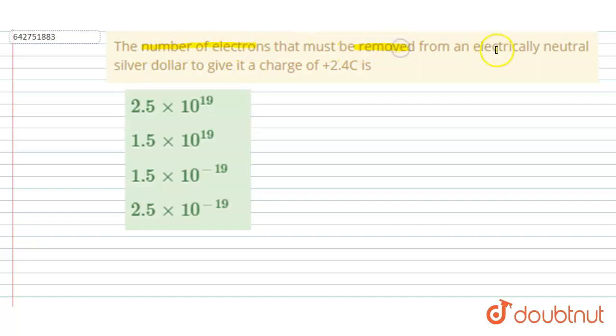So if you see the problem: the number of electrons that must be removed from an electrically neutral silver donor to give it a charge of plus 2.4 coulomb. So if you see the charge on any body...